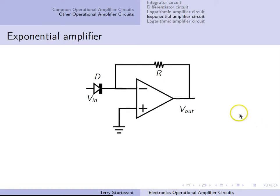For an exponential amplifier, the diode replaces the input resistor. Now the output is related to the exponential of the input. The output is proportional to minus the exponential of VIN.